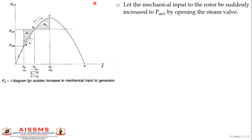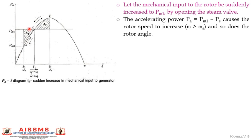Let the mechanical input to the rotor be suddenly increased to Pm1 by opening the steam valve — assuming this is a thermal generating station. The governor increases steam input slightly, raising the generator input from Pm0 to Pm1. From the swing equation, accelerating power Pa = Pm − Pe. At steady state, Pa is zero, but now with increased input, Pa = Pm1 − Pe is positive.